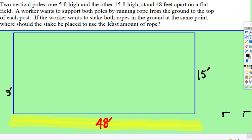A worker wants to support both poles by running rope from the ground to the top of each post. If the worker wants to stake both ropes in the ground at the same point, where should the stake be placed to use the least amount of rope?